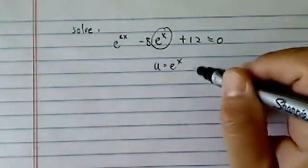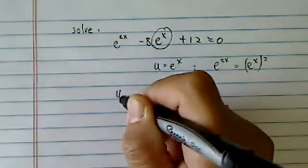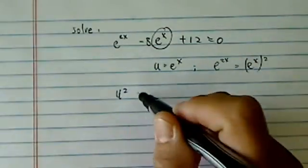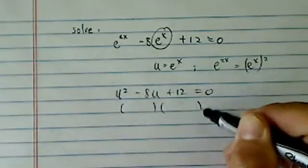So in this one, we have e to the 2x is really e to the x squared. So substitution gives us u squared minus 8u plus 12 equal to 0. So from here, it should be pretty easy.